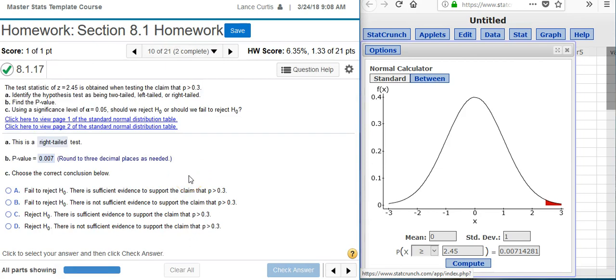And last but not least, Part C asks us to choose the correct conclusion below. We're either going to fail to reject H-naught, or we're going to reject H-naught. And the way we do that is by comparing the p-value to our alpha level.